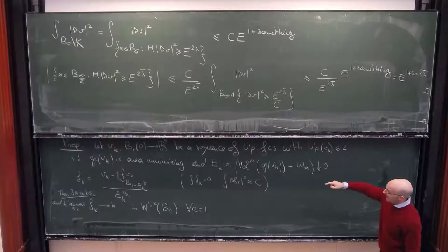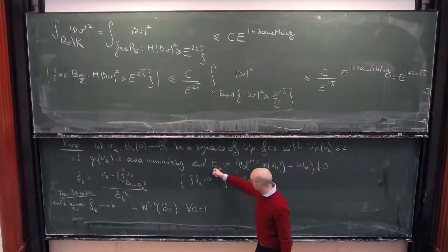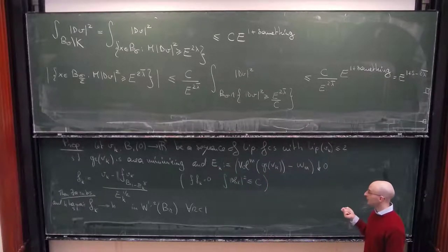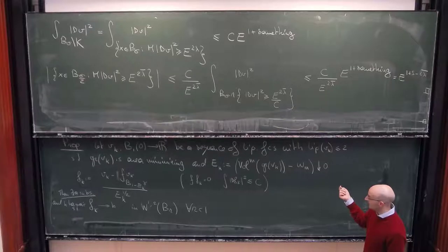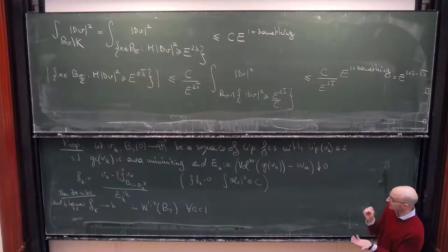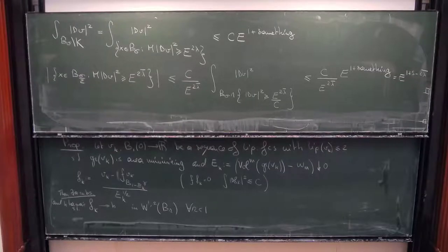Once I have proved this proposition, I know that if I choose my excess sufficiently small, there must be a harmonic function close — meaning within a fraction of the excess — to my area-minimizing function V. I can then implement the decay of the L2 norm of the derivative of the harmonic function and upgrade it to a decay of the L2 norm of the derivative of my area-minimizing graph. That gives the excess decay we examined last time and finishes the proof of the Allard theorem.